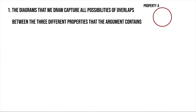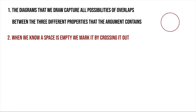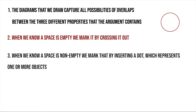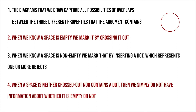The diagrams that we draw capture all possibilities of overlaps between the three different properties that the argument contains. When we know a space is empty, we mark it by crossing it out. When we know a space is non-empty, we mark that by inserting a dot, which represents one or more objects. When a space is neither crossed out nor contains a dot, then we simply do not have information about whether it is empty or not.